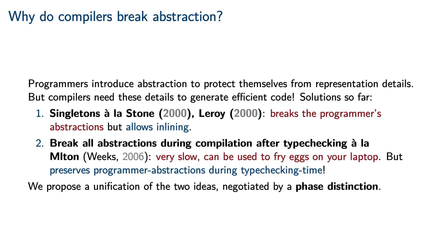While programmers introduce abstraction to protect themselves from representation details, compilers have the exact opposite needs — compilers need these representation details in order to generate efficient code. We've seen two solutions so far. One is the use of singletons à la Stone and Leroy: this has the benefit of allowing inlining, but it breaks the programmer's abstractions and therefore makes reasoning and programming more difficult. On the other hand, one can simply break all abstractions during compilation after type checking, in the style of MLton. The MLton approach is very good because it preserves programmer abstractions during type checking time and produces very efficient code. Unfortunately, it is very slow, and it can make your laptop get extremely hot.